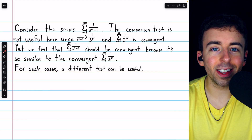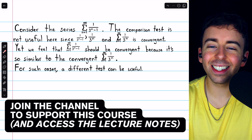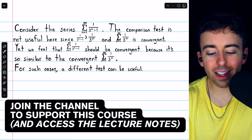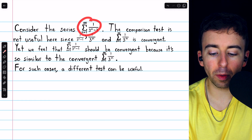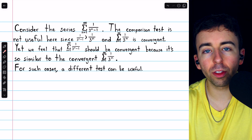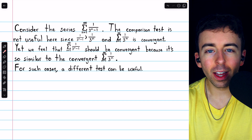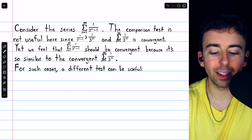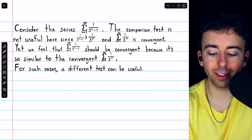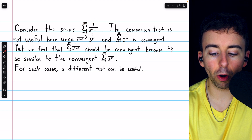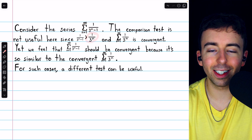We've had a lot of fun using the comparison test, but it doesn't always work. Consider this series: the sum of terms 1 over 3 to the n minus 1. You might think of using the comparison test here and comparing this series to the series whose terms are 1 over 3 to the n.